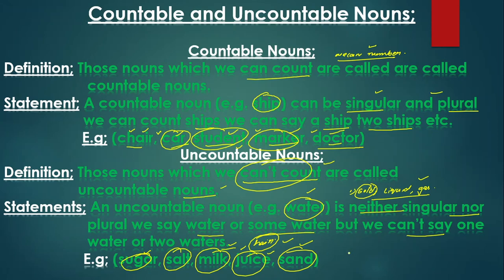The noble gases in the periodic table are also uncountable nouns. We can measure all of them but we cannot count them with numbers. For example: a glass of sugar, a spoon of salt, a kilogram or liter of milk, a glass or jug of juice, a trolley of sand — we can measure them but not count them.